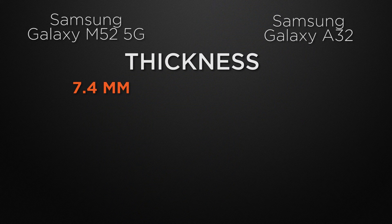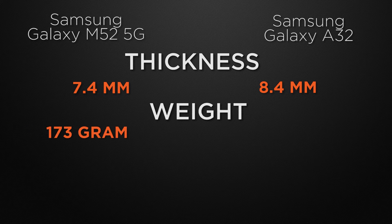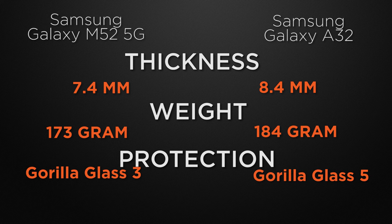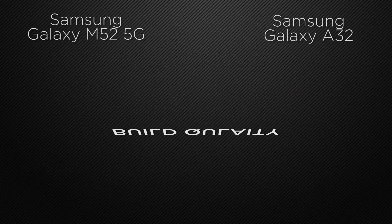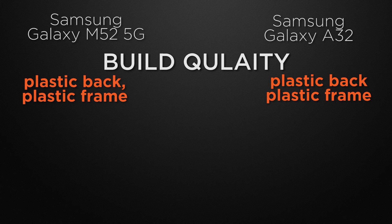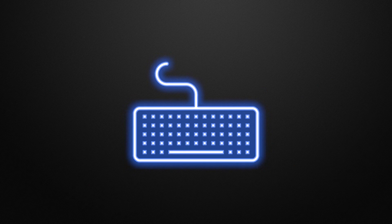Moving to the body features, the M52 has 7.4mm thickness whereas the A32 has 8.4mm, so the winner is the M52 because it has a slimmer body. The M52 weighs 173 grams whereas the A32 weighs 184 grams, so the M52 wins with a lighter body. However, the A32 has Gorilla Glass 5 while the M52 has Gorilla Glass 3, so the A32 wins in glass protection. Both devices have a plastic back with a plastic frame and dual nano-SIM support, so those are ties.